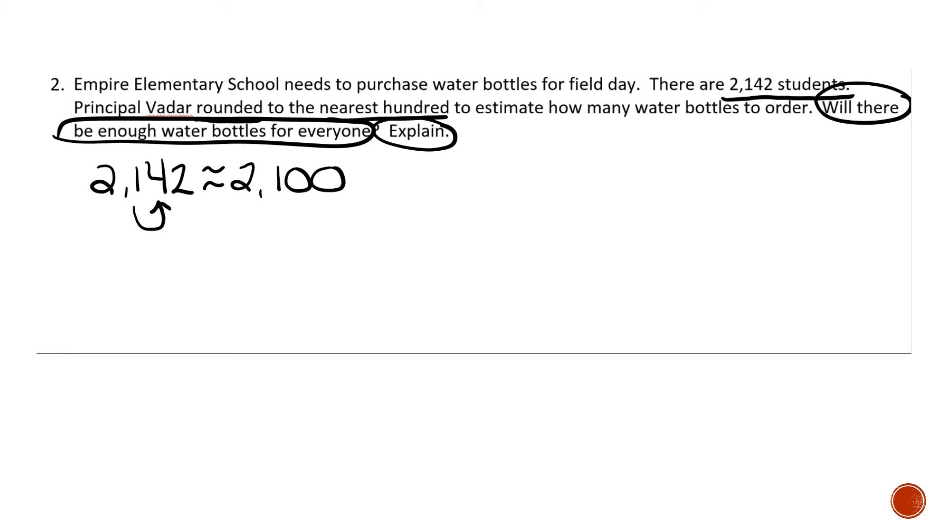If I go back to my problem, I have used the number in the problem, I have rounded to the nearest hundred. Now I go to the question, will there be enough water bottles for everyone? 2,100 is less than the number of students that are going to the school. So I know there will not be enough water bottles.